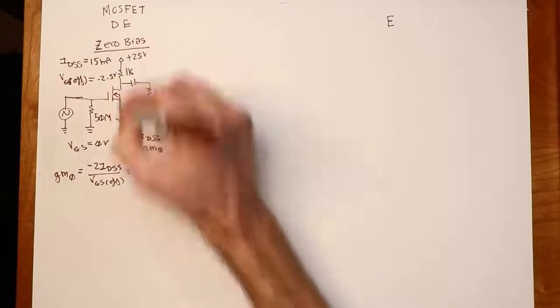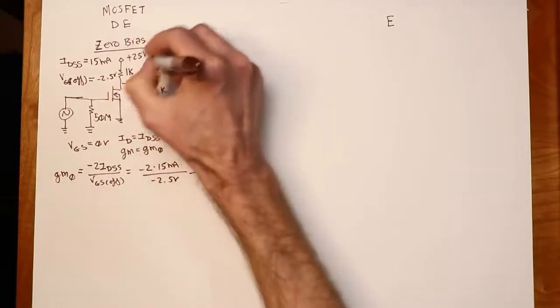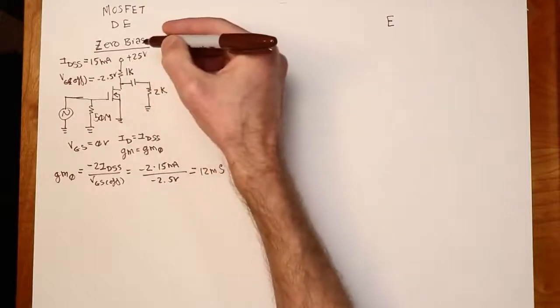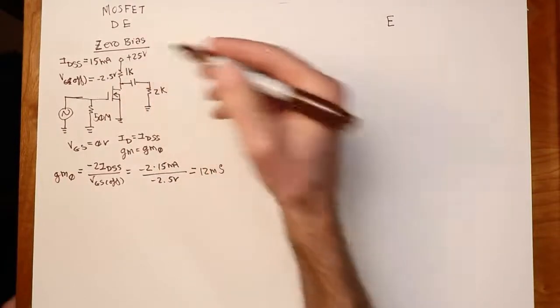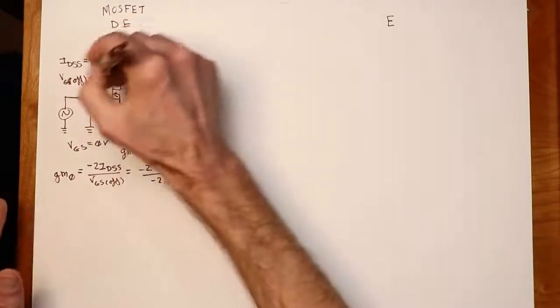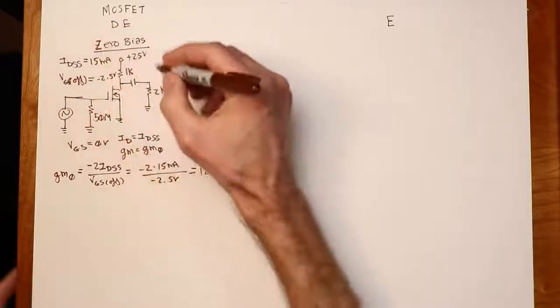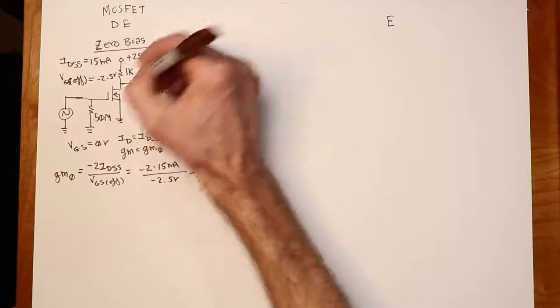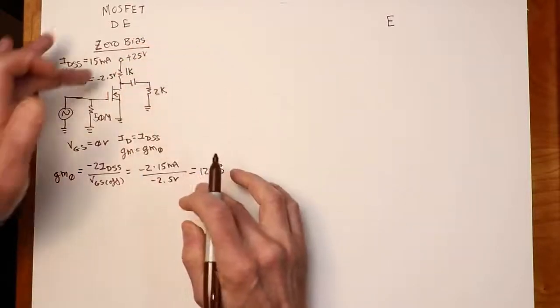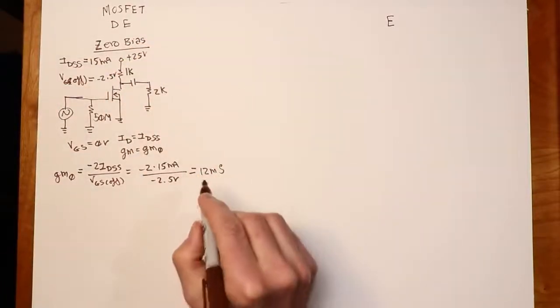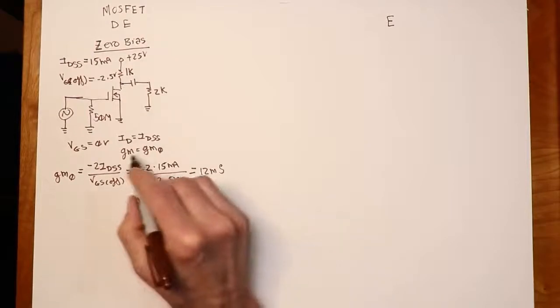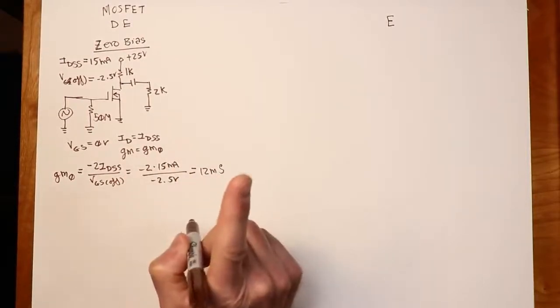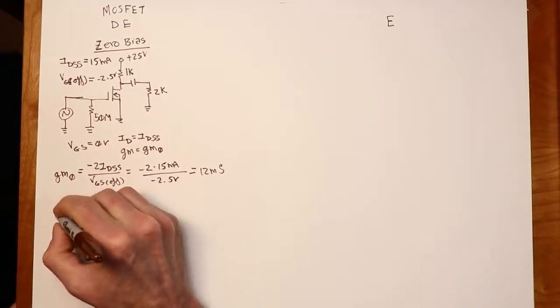All right. That will produce a 12-volt drop across the 1K. 25-volt source means the drain voltage would be... oh, I'm sorry, 15 milliamps times the 1K would be 15 volts. 15 from the 25 would get us 10, sorry about that. But the GM we know is going to be GM zero. We know that's 12 millisiemens. So we can now figure out what the gain on this is going to be.